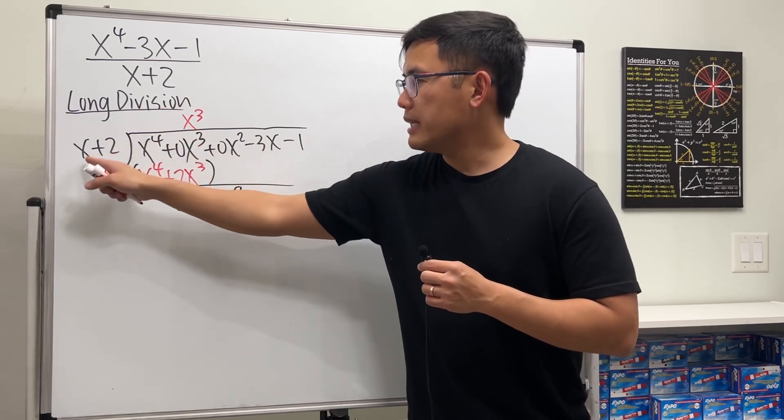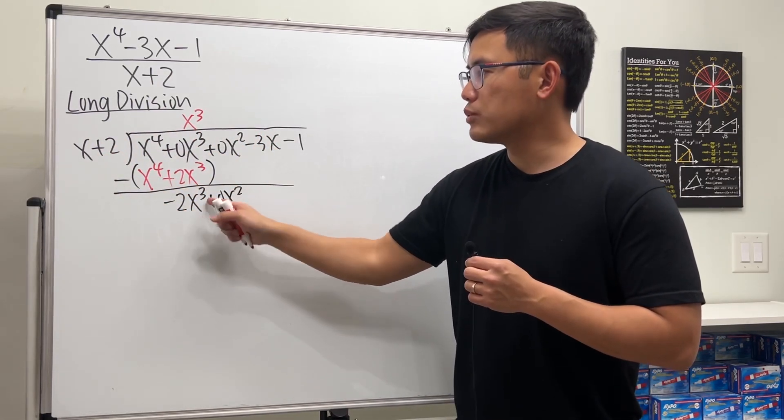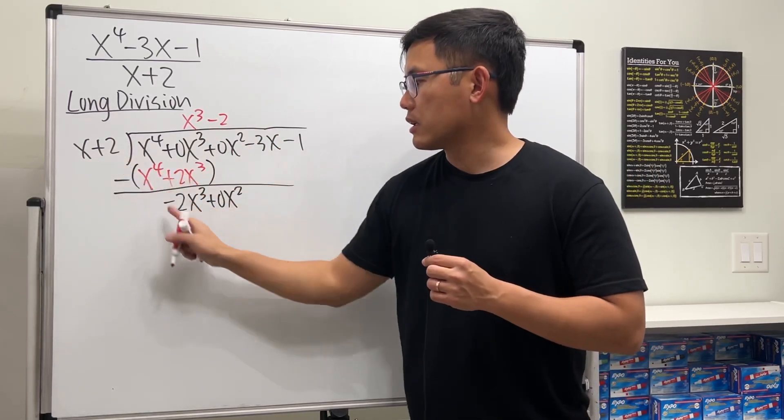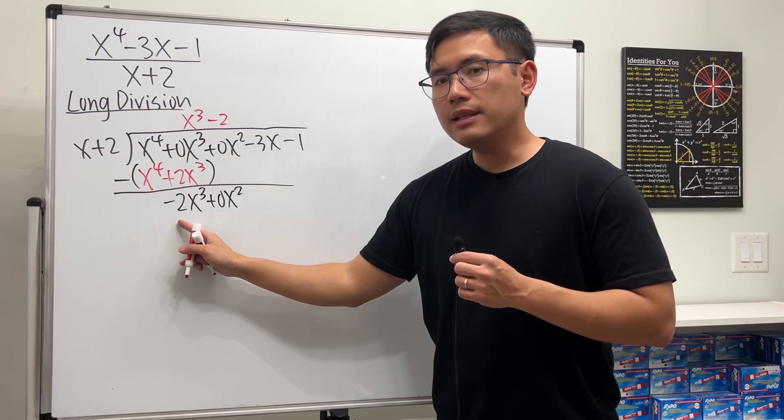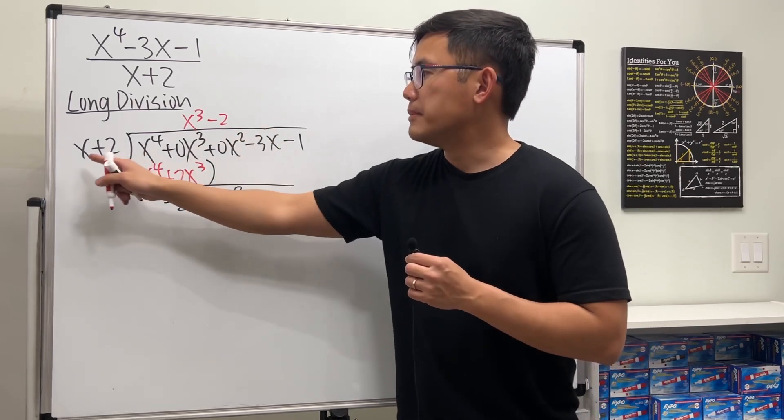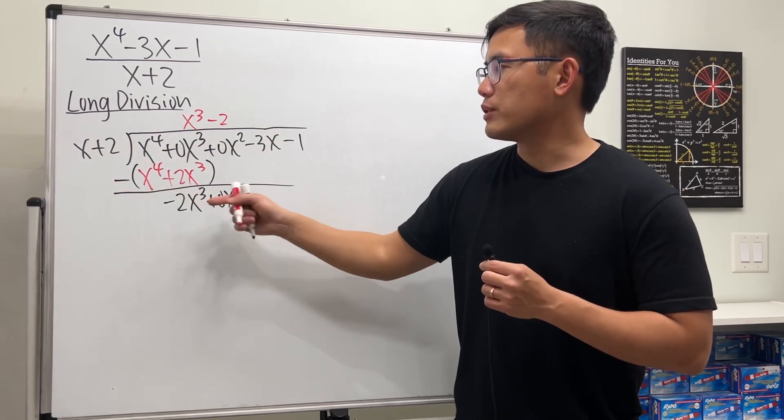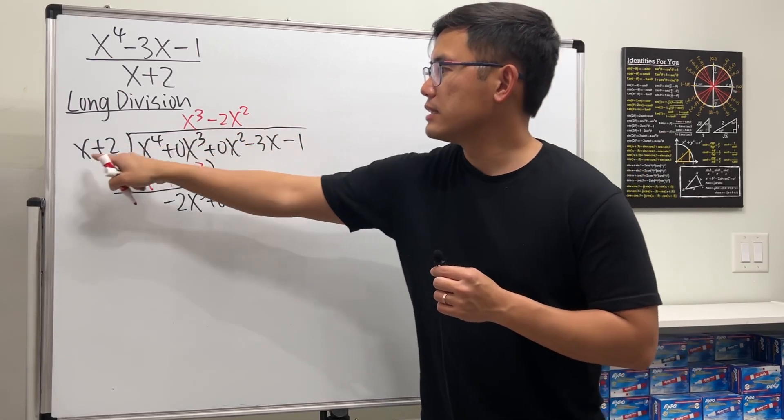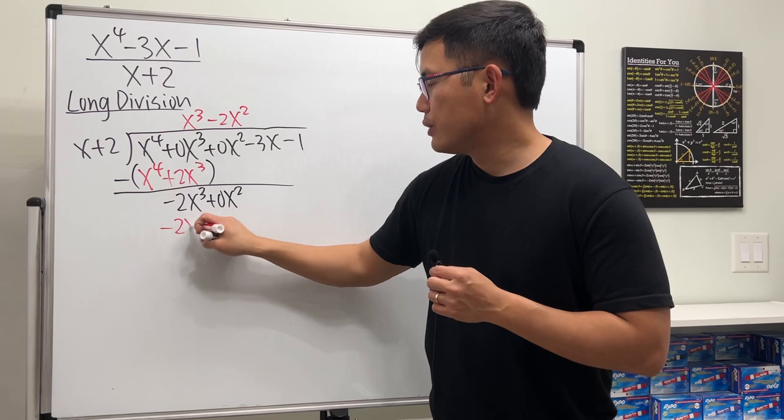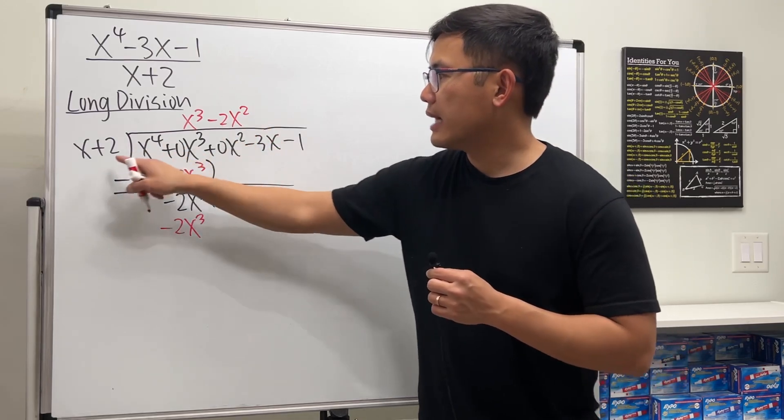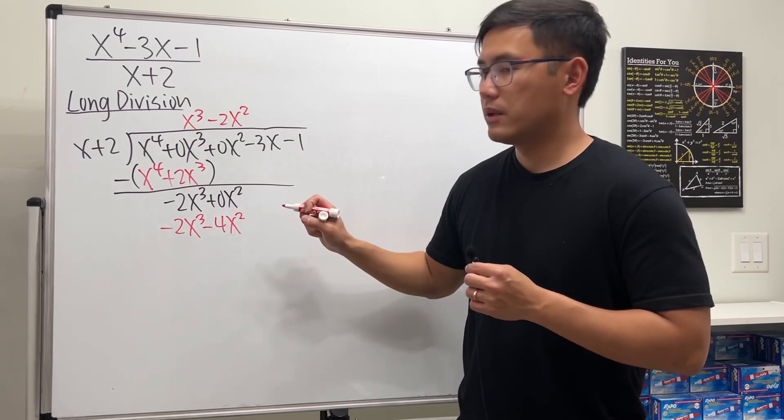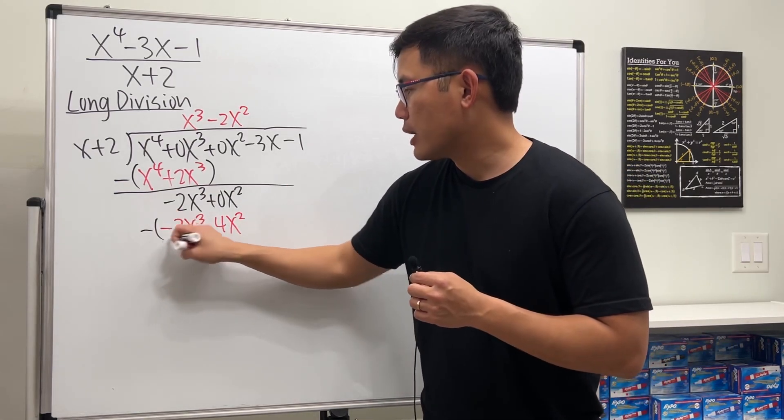Now, what times x will give us negative 2x to the third power? First, we need negative 2, right? To get the correct coefficient. Next, x squared times x to the first will give us x to the third. So I need x squared. Now, let's take this times that. We have negative 2x to the third power. And then take that times that. We get minus 4x squared. And then again, we subtract like this.